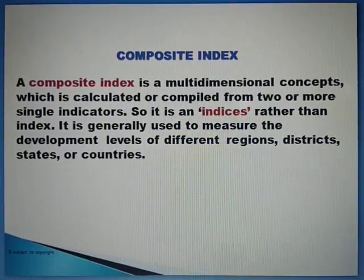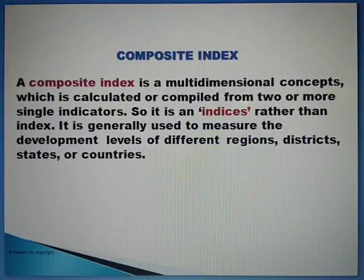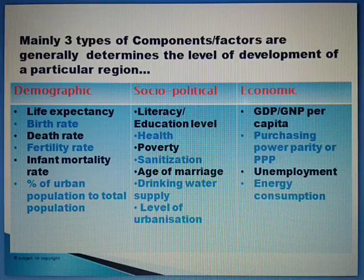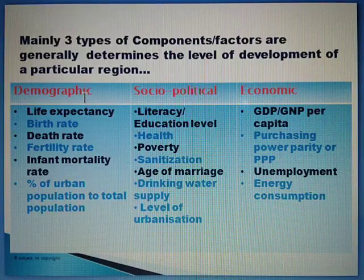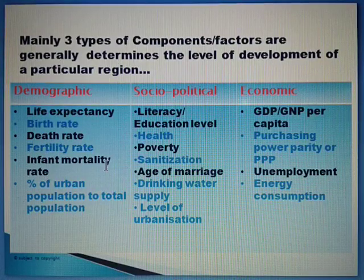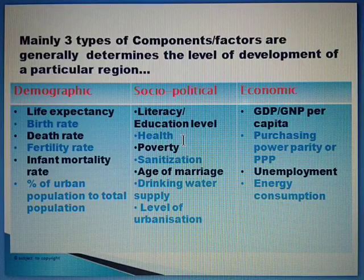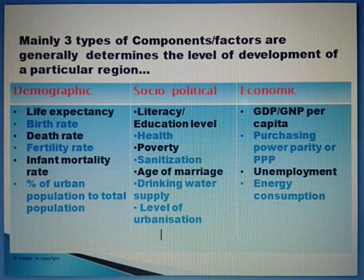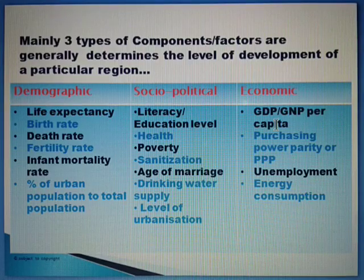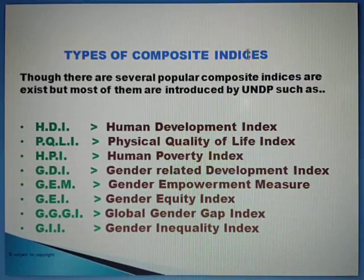Composite index is basically used to measure the level of development. Three types of components or factors are used to determine the level of development: demographic determinants, sociopolitical determinants, and economic determinants. Demographic determinants include life expectancy, birth rate, death rate, fertility rate, infant mortality rate, percentage of urban population, literacy or educational level, health, poverty, sanitation, marriage rate, drinking water supply, and level of urbanization. Economic components include GDP or GNP per capita, purchasing power parity (PPP), unemployment, and energy consumption.